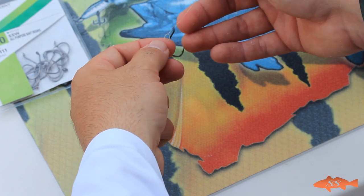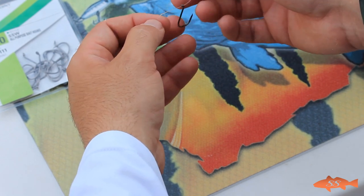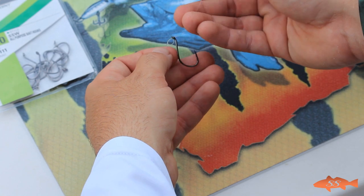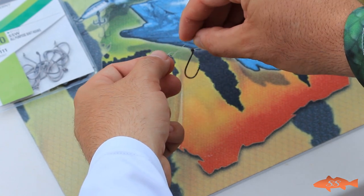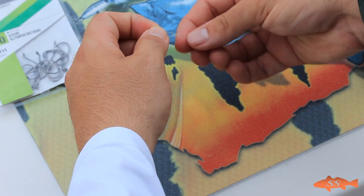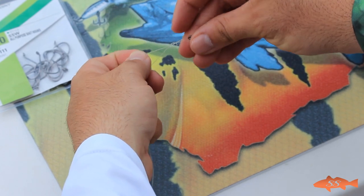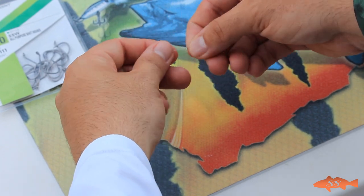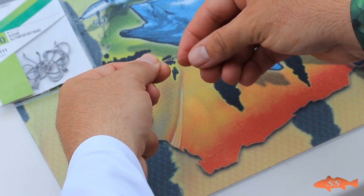Alright, so now you have the loop sitting behind the eye of the hook, just like so. You take the tag end and you run it right through that loop that you just created. So now you should have something that looks just like this. Hopefully you can see that.